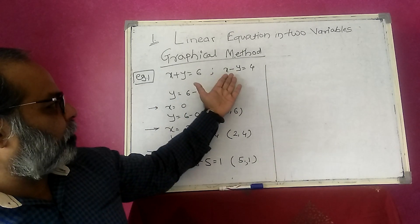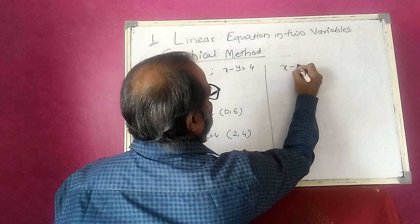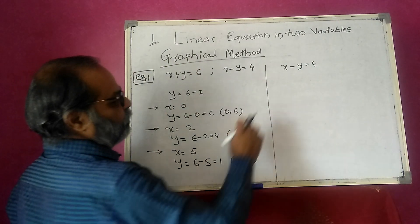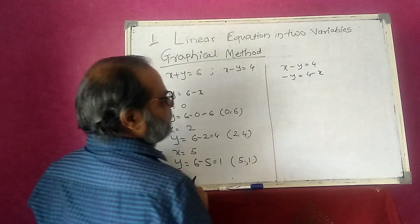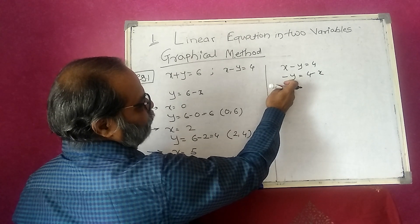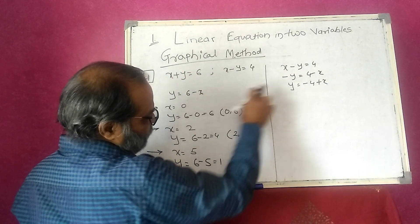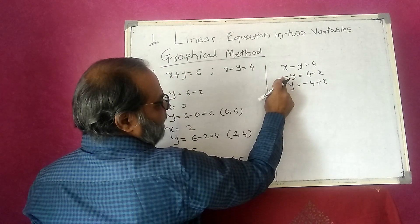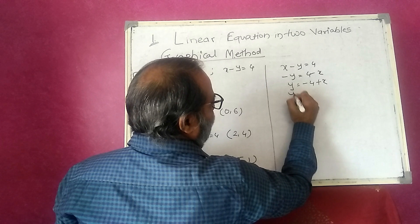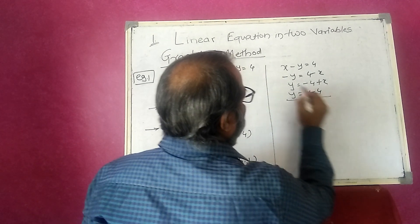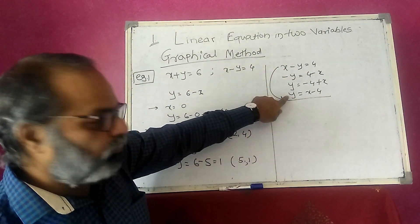Now finding the values for the second equation: x minus y is equal to 4. Convert this equation in terms of y. That means minus y is equal to 4 minus x. I change all signs, so y is equal to x minus 4. We know that every equation is to be converted in terms of y.